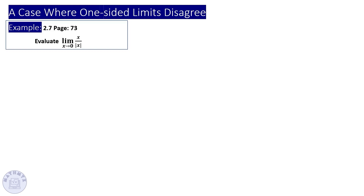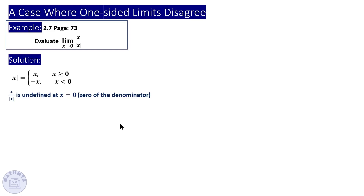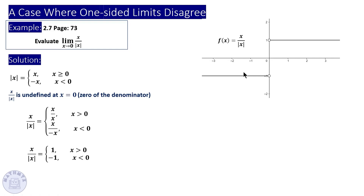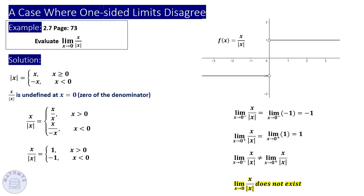In this example, evaluate the limit of x / |x| as x approaches 0. We rewrite the absolute value as a piecewise function: x when x > 0, and -x when x < 0. This gives the function a value of 1 when x > 0, and -1 when x < 0. Looking at the graph, the limit from the left side is -1 and from the right side is 1. Since they differ, the limit does not exist.